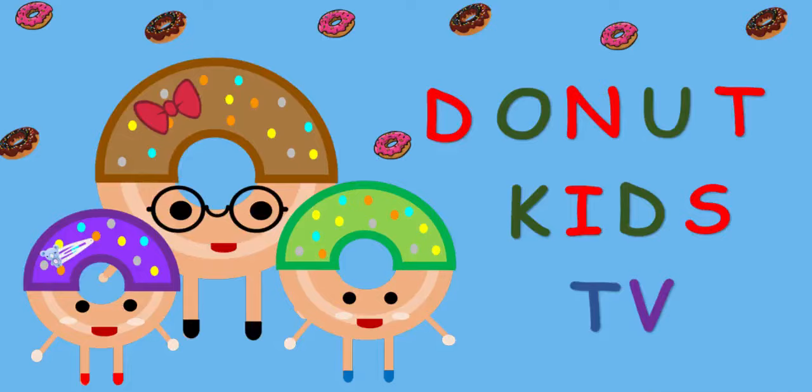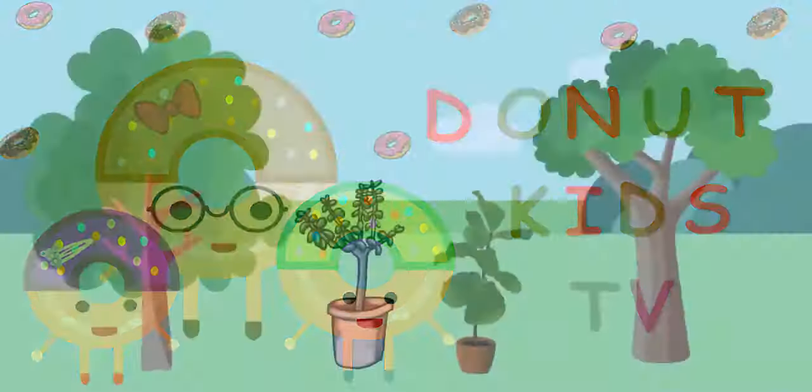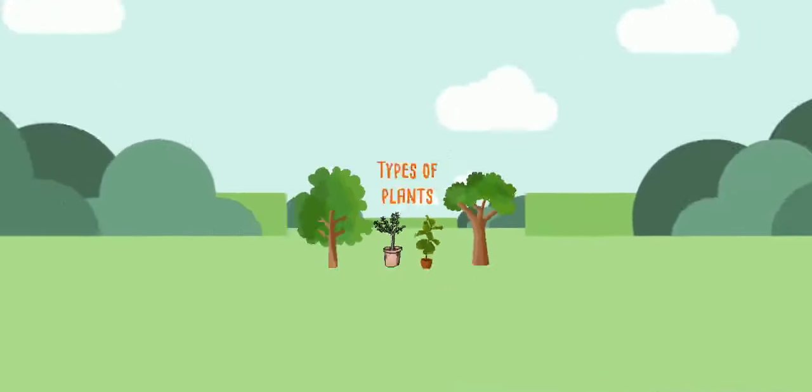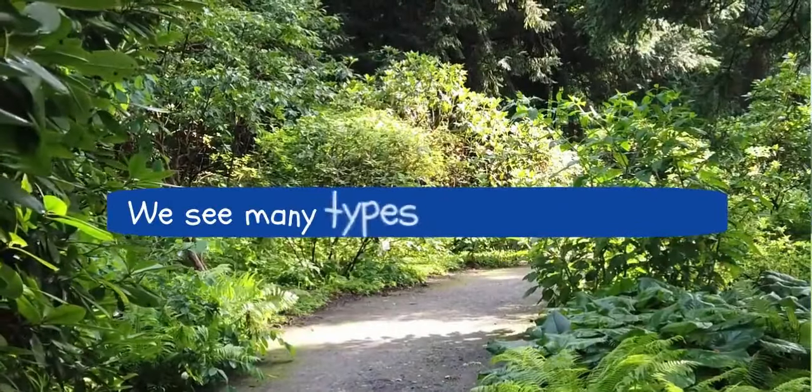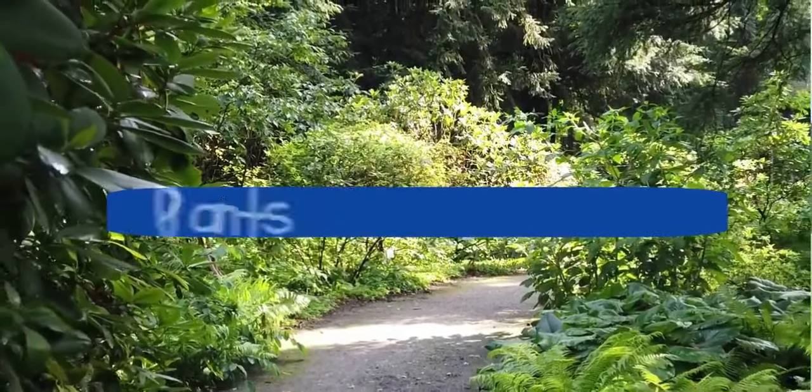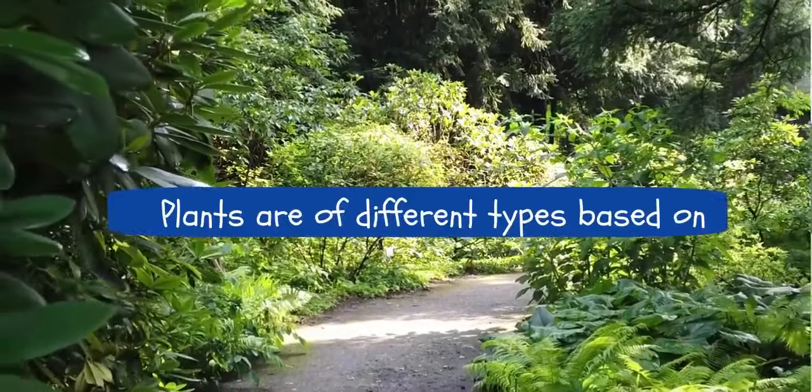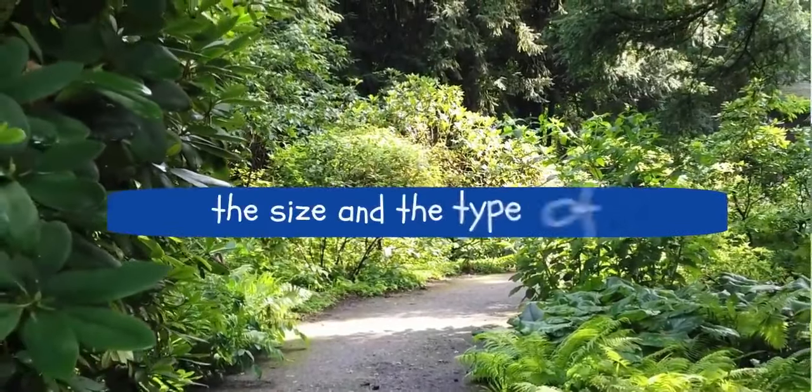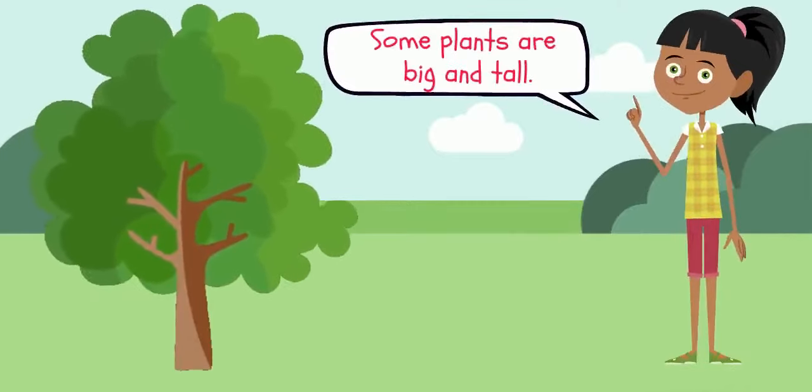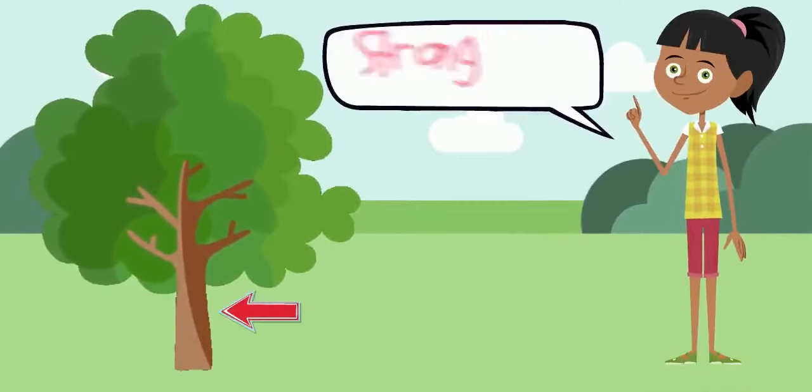Donut Kids TV. Let us learn about different types of plants. We see many types of plants around us. Plants are of different types based on the size and type of stem. Some plants are big and tall; they have strong and woody stems.